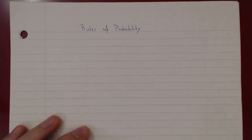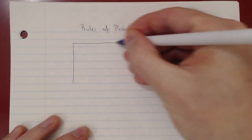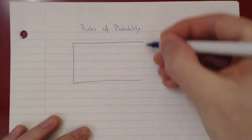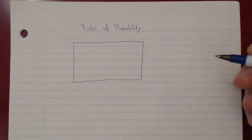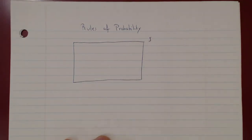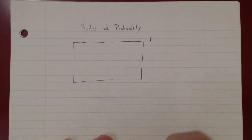Let's look at some basic rules of probability. We have the sample space, which we draw as a Venn diagram — a rectangular box. The sample space, in an experiment, contains all possible outcomes of the experiment.